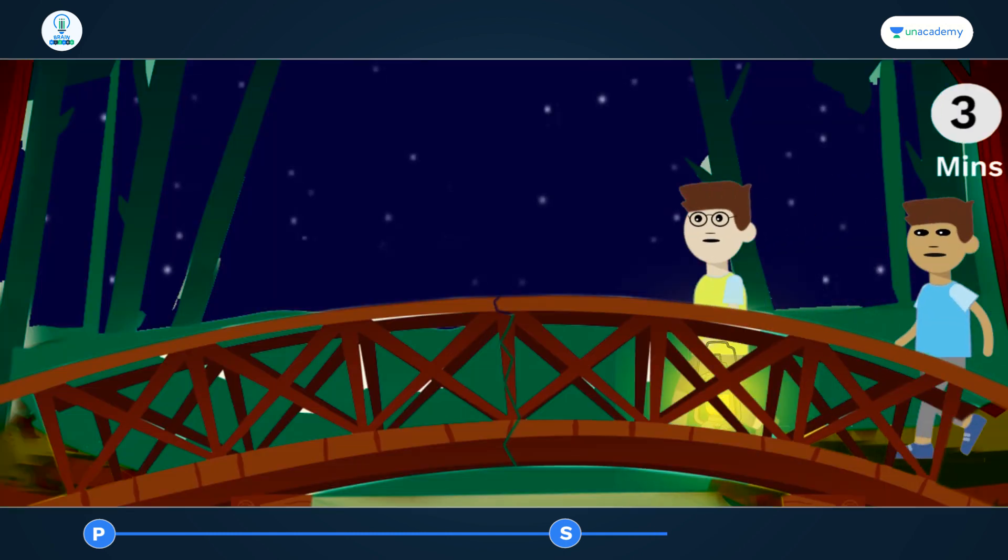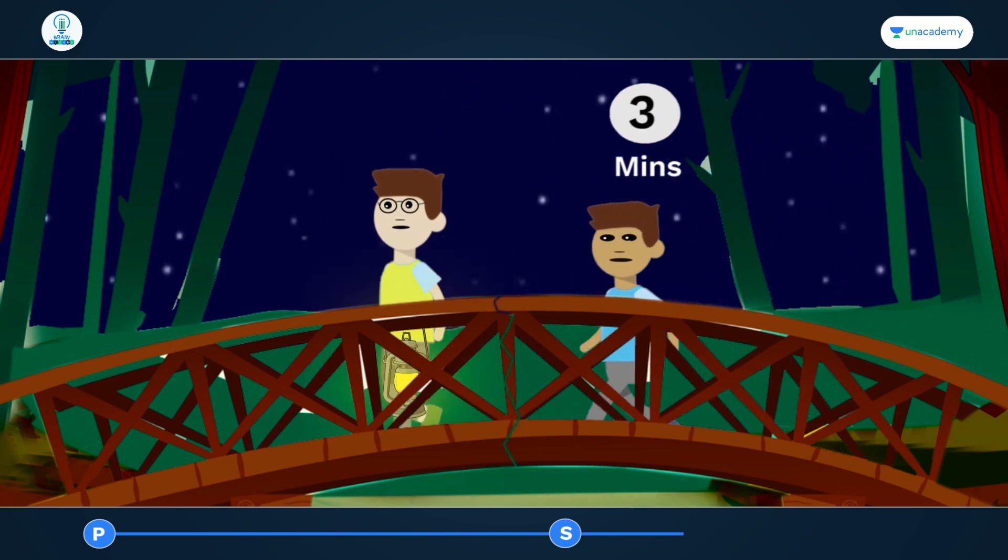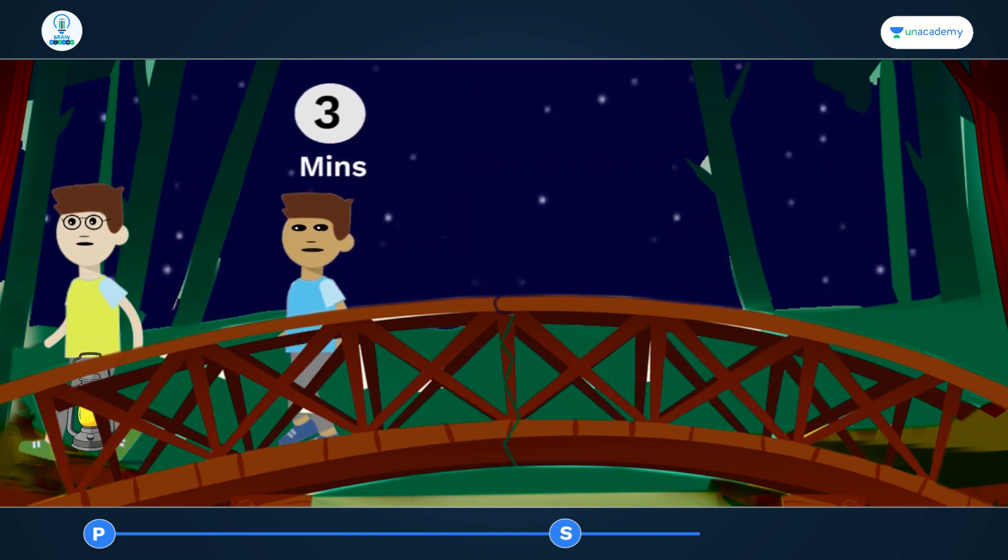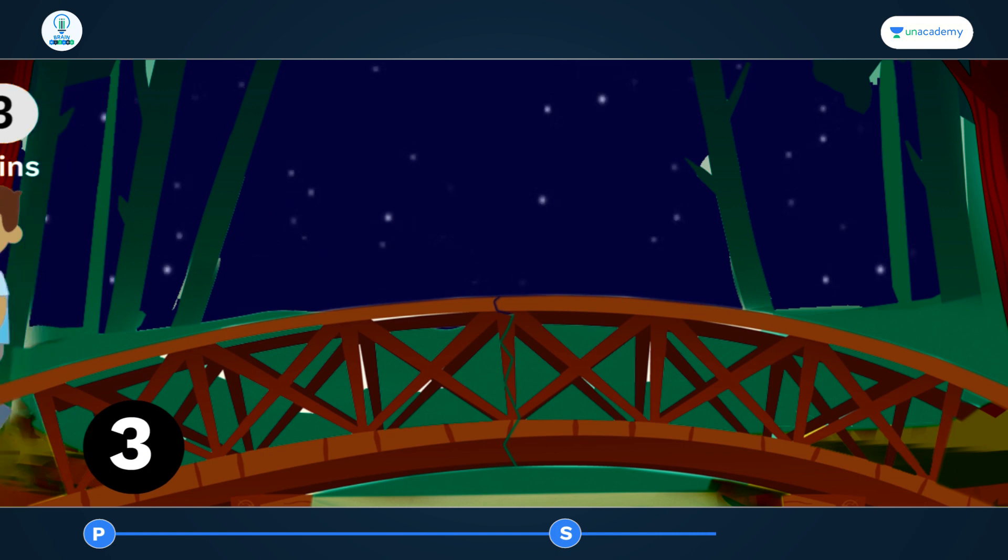First, Akash and Shyam will go together. This will take 3 minutes as the slowest between the two is Shyam, who takes 3 minutes time to cross the bridge.